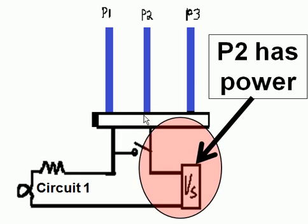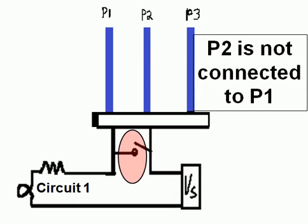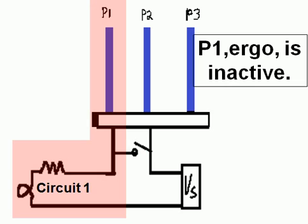But prong two has power, it's attached to a voltage source. But P2 is not connected to P1. This switch is open. P1 ergo is inactive.